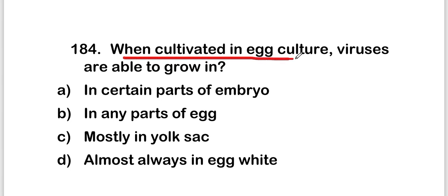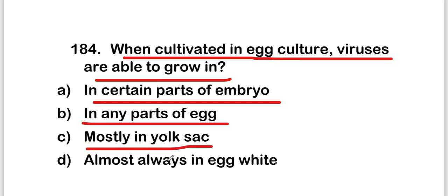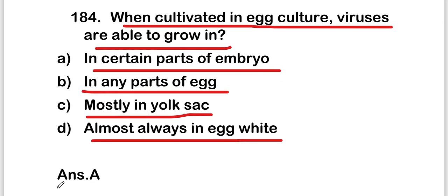When cultivated in egg culture, viruses are able to grow in — options are: certain parts of embryo, any part of egg, mostly in yolk sac, or almost always in egg white. The right answer is option A: in certain parts of embryo. When cultivated in egg culture, viruses are able to grow in certain parts of the embryo.